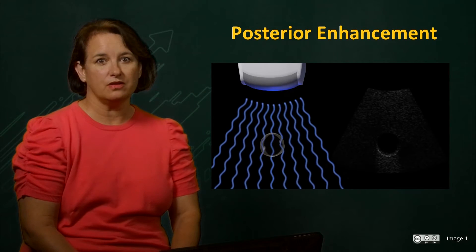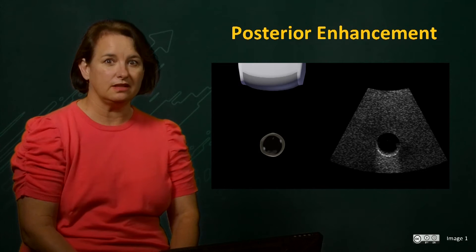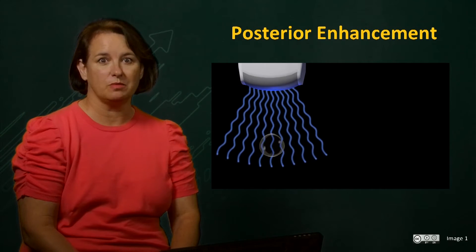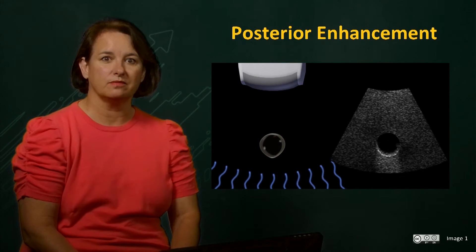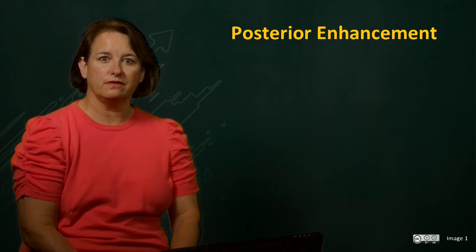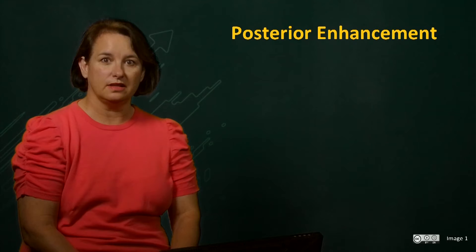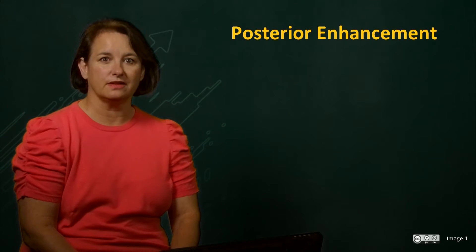However, the echoes returning from the deeper tissue are stronger than those from the adjacent tissue at the same depth, because they haven't been attenuated the same amount. When this occurs, this is known as posterior enhancement. Examples of fluid-filled structures commonly seen in clinical ultrasound include a distended urinary bladder, a gallbladder, simple cyst, and the amniotic fluid around a fetus.